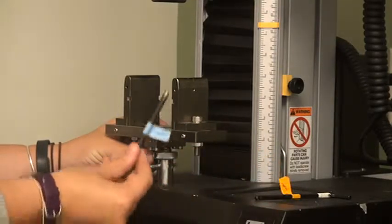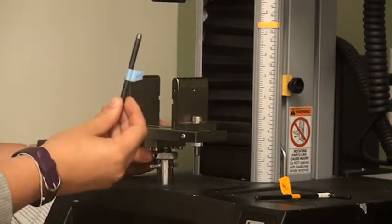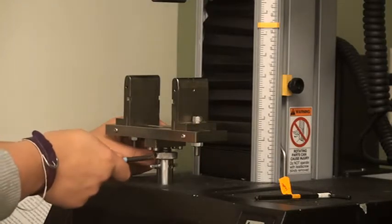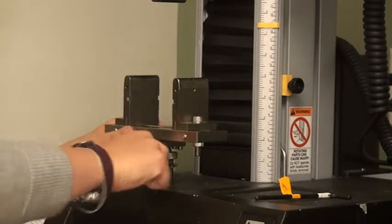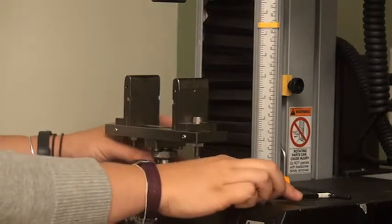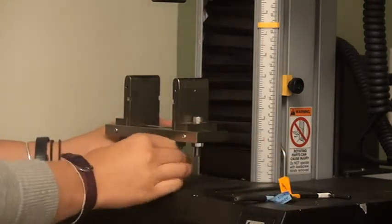If the lock nut is very tight, you can use the lock nut tightening tool to help you unscrew it. Insert the tool into one of the holes on the lock nut and unscrew until the lock nut is flush against the bottom face of the grip.